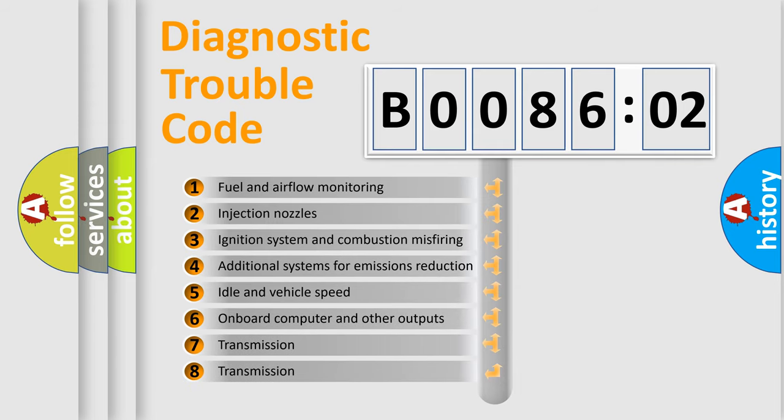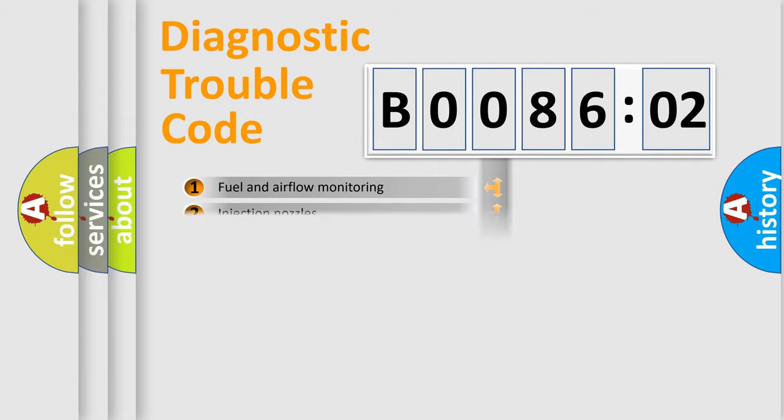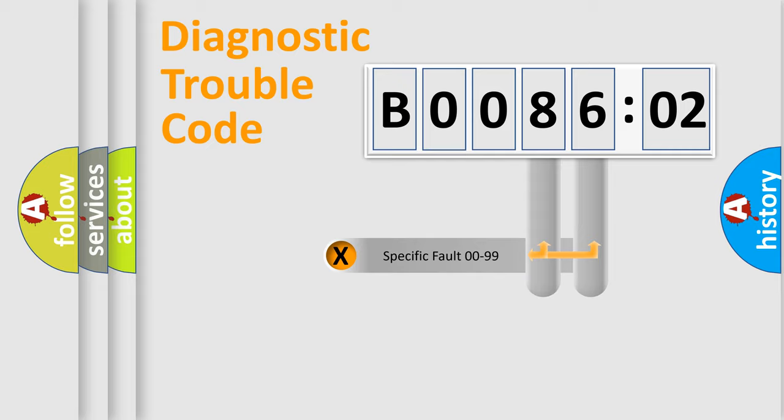The third character specifies a subset of errors. The distribution shown is valid only for the standardized DTC code. Only the last two characters define the specific fault of the group.